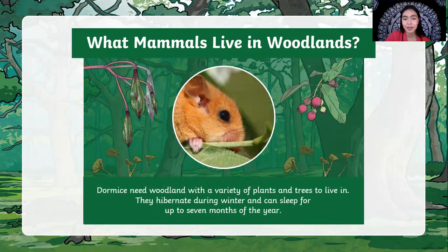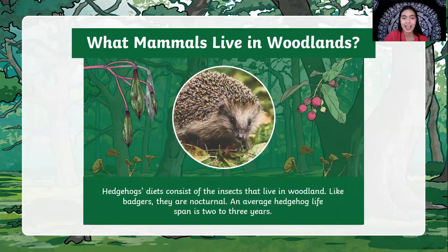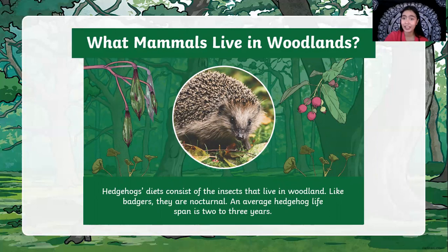Dormice need woodland with a variety of plants and fruits to live in. They hibernate during winter and can sleep for about seven months of the year. Hedgehogs' diet consists of insects that live in the woodland. Like badgers, they are nocturnal animals — awake in the evening.